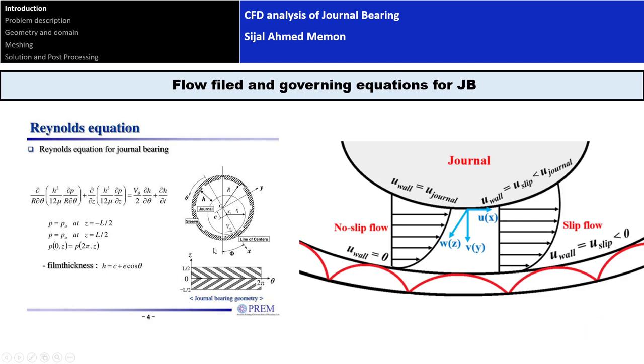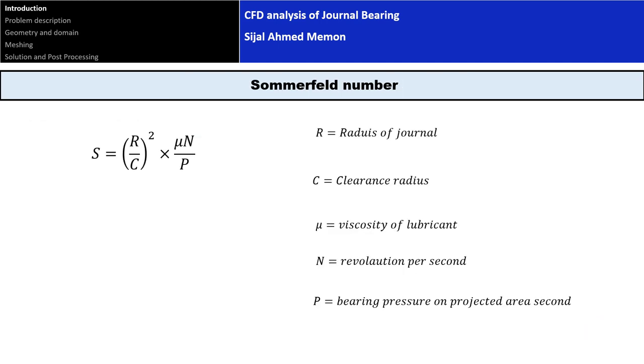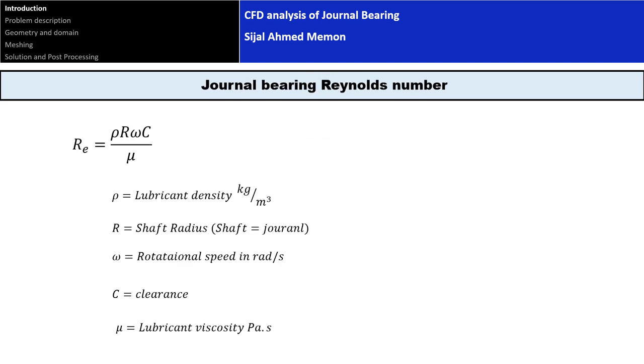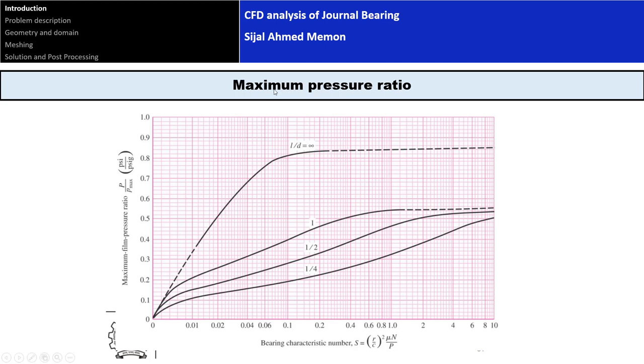We'll discuss equations governing the flow in journal bearings and important parameters like the Sommerfeld number and Reynolds number. Finally, I'll discuss the graphs taken from Shigley's Mechanical Engineering Design book and compare our CFD data with these graphs.